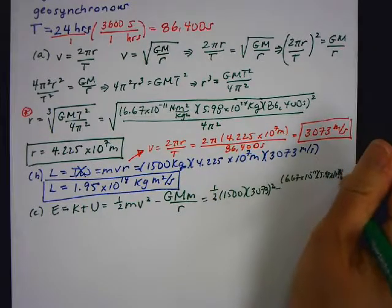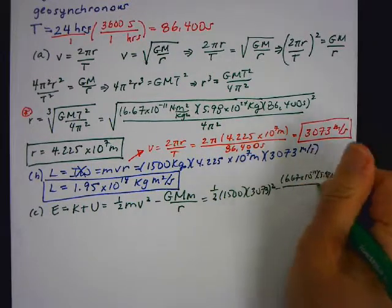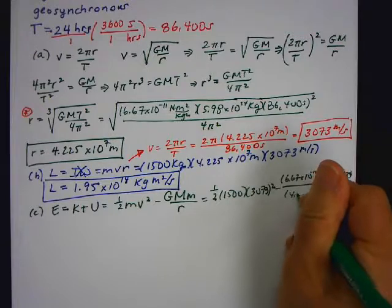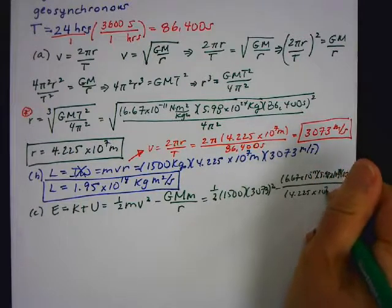10 to the 24, 1,500. I'm writing tiny. Over 4.225 times 10 to the 7.